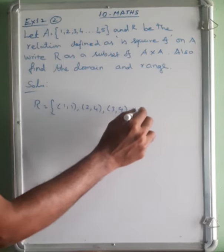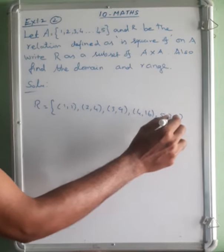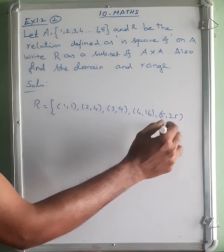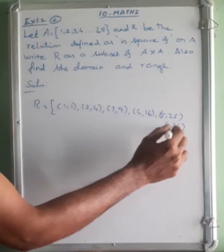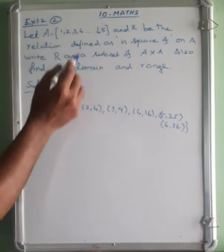1, 1; 2, 4; 3, 9; 4, 16; 5, 25; 6, 36; 7, 49. This is the same as 45.